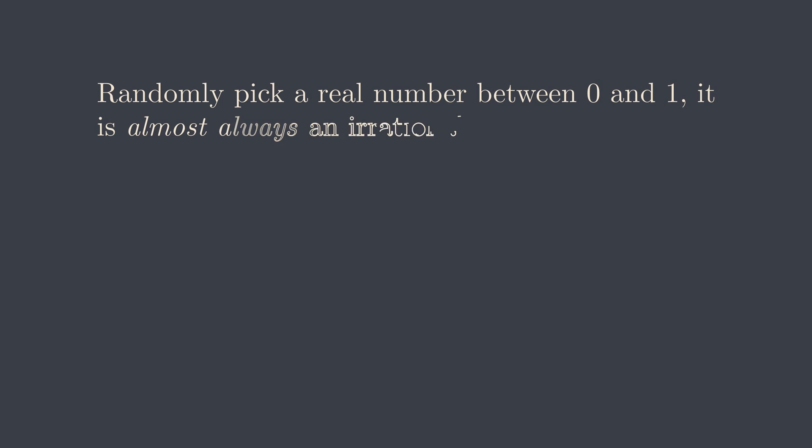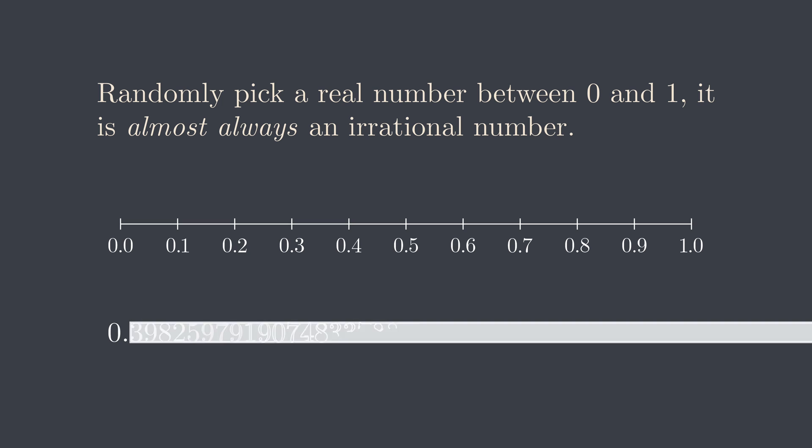First, let's build an intuition that a randomly picked real number between 0 and 1 is almost always an irrational number. Here is a random number and we don't know its identity, and we have to guess whether it's a rational number or an irrational number. Let's do it digit by digit.